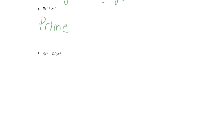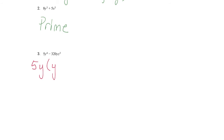Let's do one more together, and then I'm going to let you go on your own. Number 3: 5y to the 4th minus 320yz cubed. I can divide them both by 5 because they both end in 5 or 0. The first term has 4 y's and the second has 1, so I can also factor out y. So let's see what we're left with: y cubed minus 64z cubed.